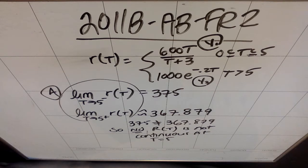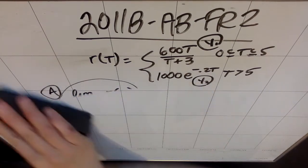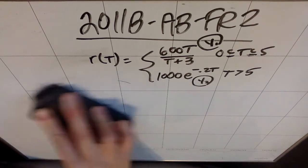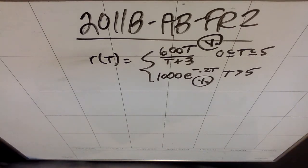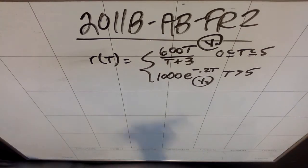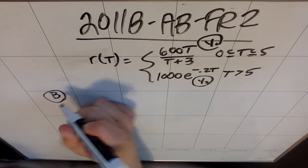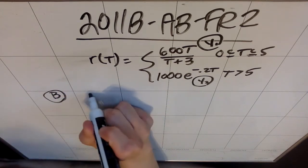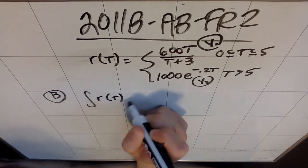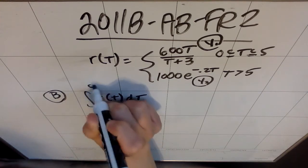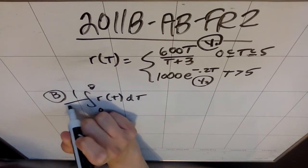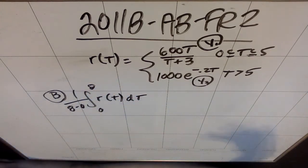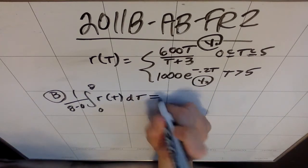Part b, find the average rate at which the water is draining from the tank between 0 and 8 hours. Anytime you're asked to find the average value of something, the easiest way to do it is use the average value formula, which is to integrate the quantity and divide by the width of the interval. So in part b, in order to find the average rate, what I want to do is I want to integrate r of t dt from 0 to 8 and divide by, or times by 1 over 8 minus 0, which is the same as dividing by 8. So this is what you need to show the AP.